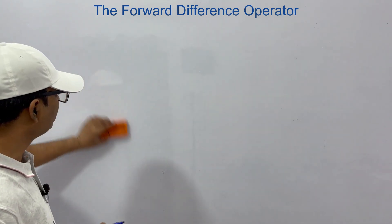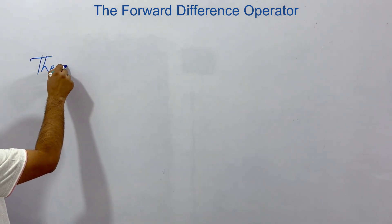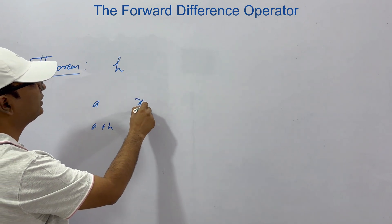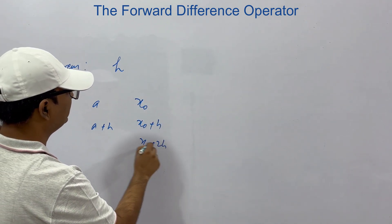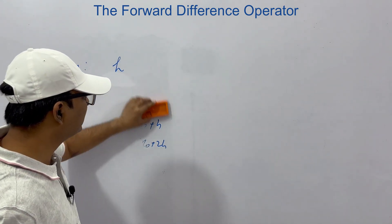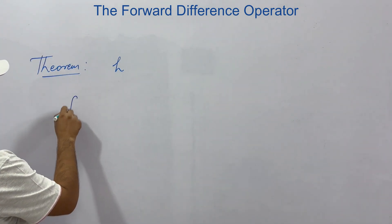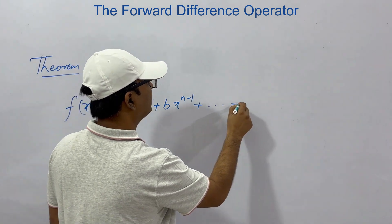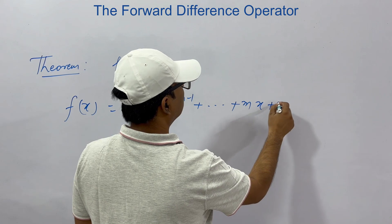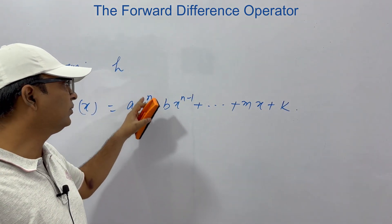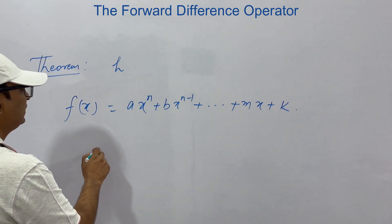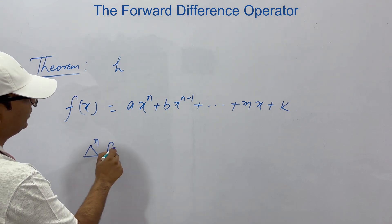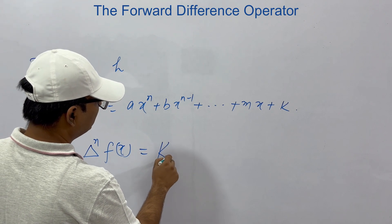There is a very important theorem here. The theorem says that if we have equally spaced intervals — that is, using a, a+h, a+2h, x₀, x₀+h, x₀+2h — the differences are equally spaced. In this case, for a polynomial of nth degree, the nth difference will be a constant. This is the theorem.